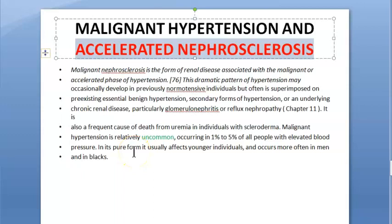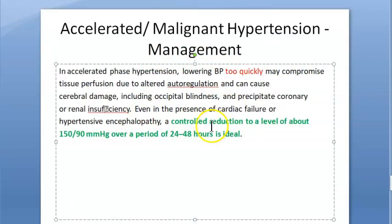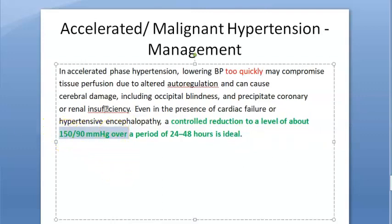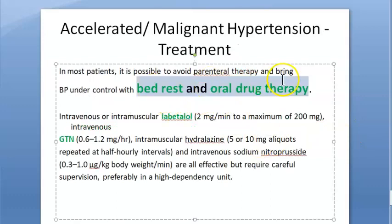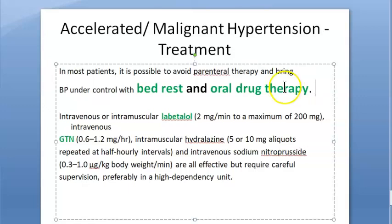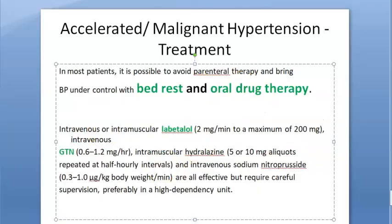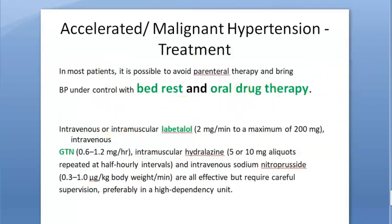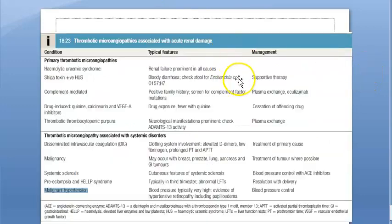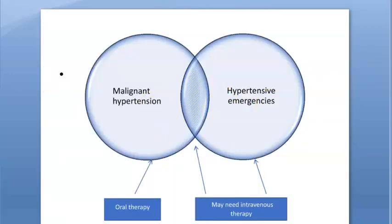For management: do not reduce blood pressure quickly — this is not an emergency. Perform a controlled reduction over 24 to 48 hours targeting 150/90 mmHg. Oral drug therapy is sufficient, along with bed rest. Although the specific oral drug was not mentioned in the source, standard antihypertensives such as amlodipine are commonly used to reduce blood pressure gradually.